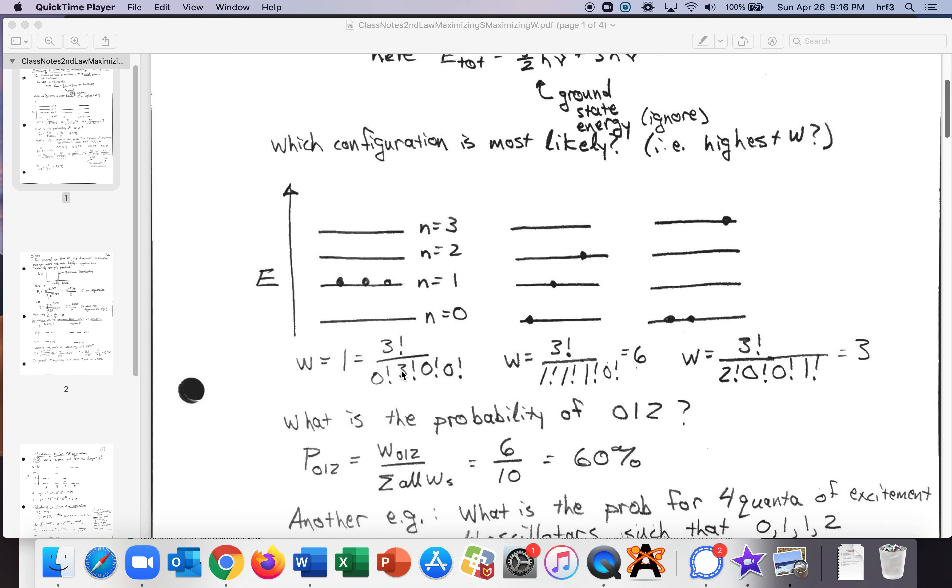So three factorial divided by zero factorial, which is one, times three factorial times zero factorial times zero factorial, etc. So for this state, it's going to be three factorial divided by one times one times one times one. So that's six. For this state, it's three factorial divided by two factorial, zero factorial, zero factorial, one factorial. So that's three.